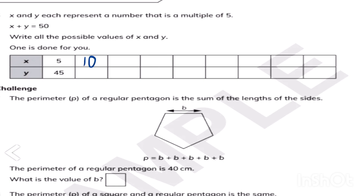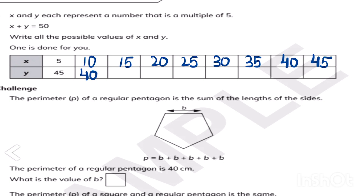X and Y — the values of X and Y should be multiples of 5. The first value is given as 5, so write all values: 5, 10, 15, 20, 25, 30, 35, 40, 45. Since X plus Y should equal 50, fill in Y values accordingly: 10 plus 40 is 50, 15 plus 35 is 50. In this way, get all values that are multiples of 5 where X plus Y equals 50.